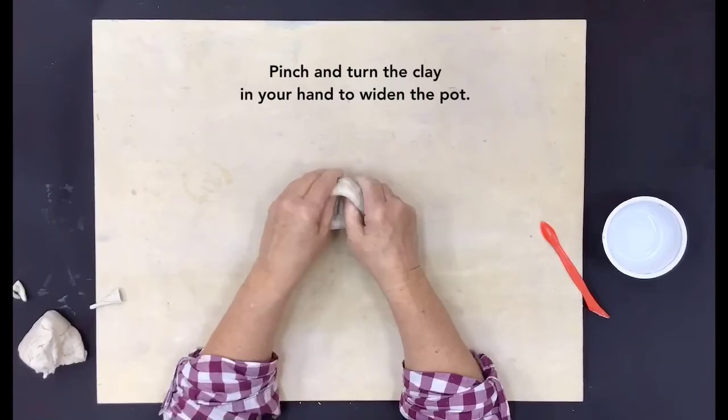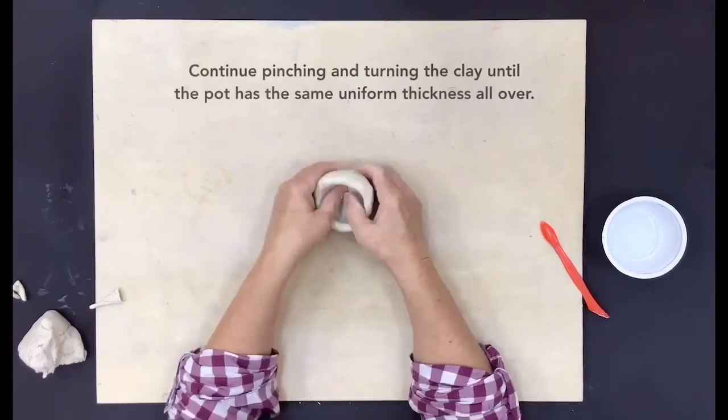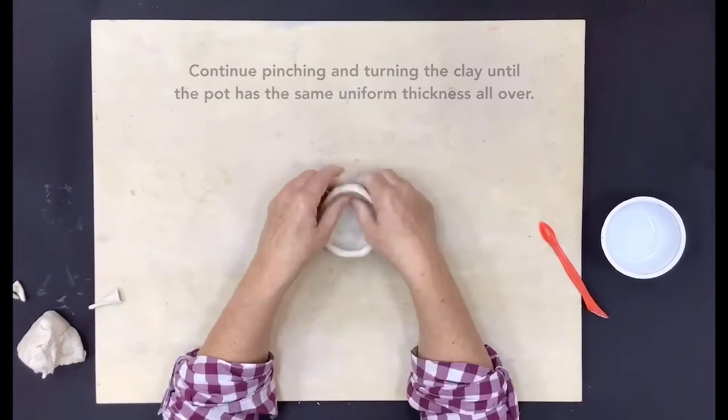Pinch and turn the clay in your hand to widen the pot. Continue pinching and turning the clay until the pot has the same uniform thickness all over.